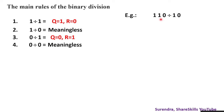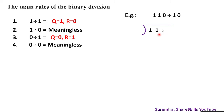Now let me show you an example: 110 divided by 10. If you convert them to decimal, 110 is 6 in decimal and 10 is 2 in decimal, so we are dividing 6 by 2. Let me show you this in the standard division format, where 10 is the divisor.